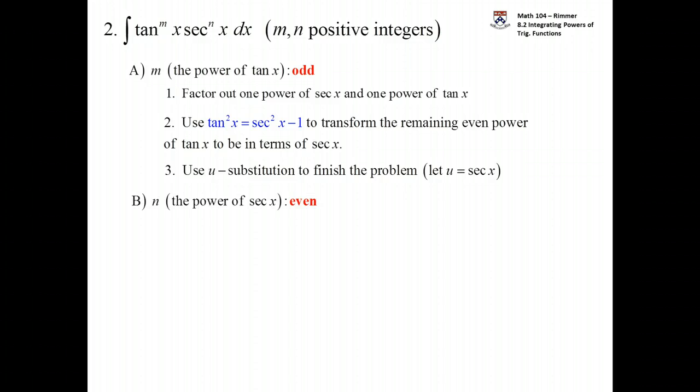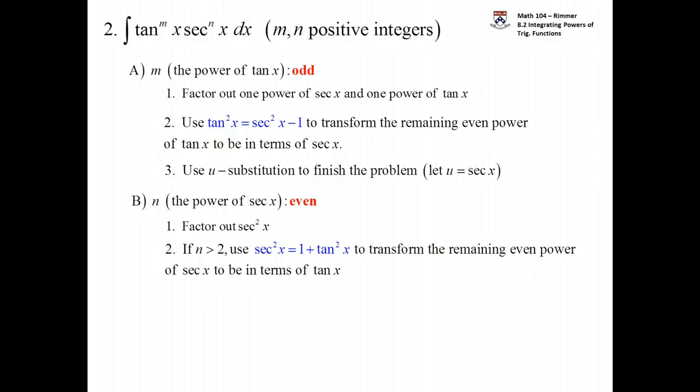Next up, what about if the power of secant is even? So then what we need to do in this case is factor out secant squared of x. Now if the number on the power of secant is more than two, then we'll have to transform the rest of them. There'll be remaining even powers left over. And so we'll use the secant squared of x equals one plus the tangent of x, tangent squared of x. And then that will transform those other guys to be powers of tangent.